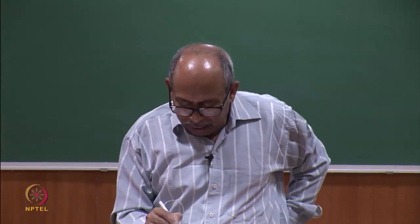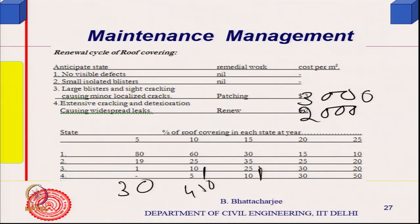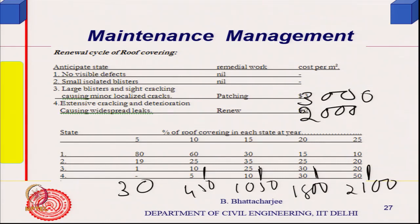35 × 3000 = 1050 rupees; 60 × 3000 = 1800 rupees. At 70 percent, clearly it would be costlier to wait further. You should do complete renewal of all buildings under your total area. Per square meter costs come out as: 30, 450, 1050, 1800, 2100 — showing the escalation over time periods.